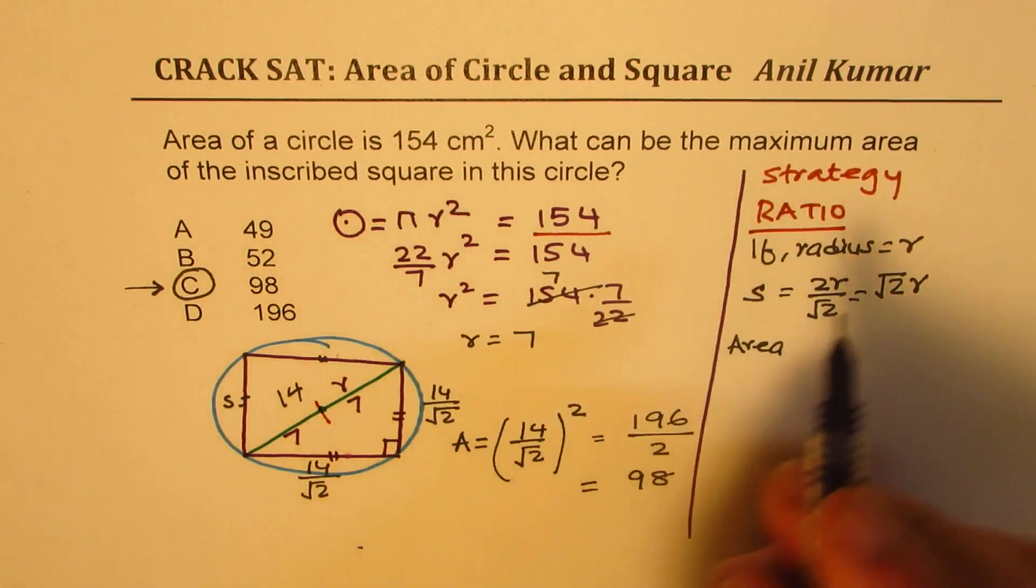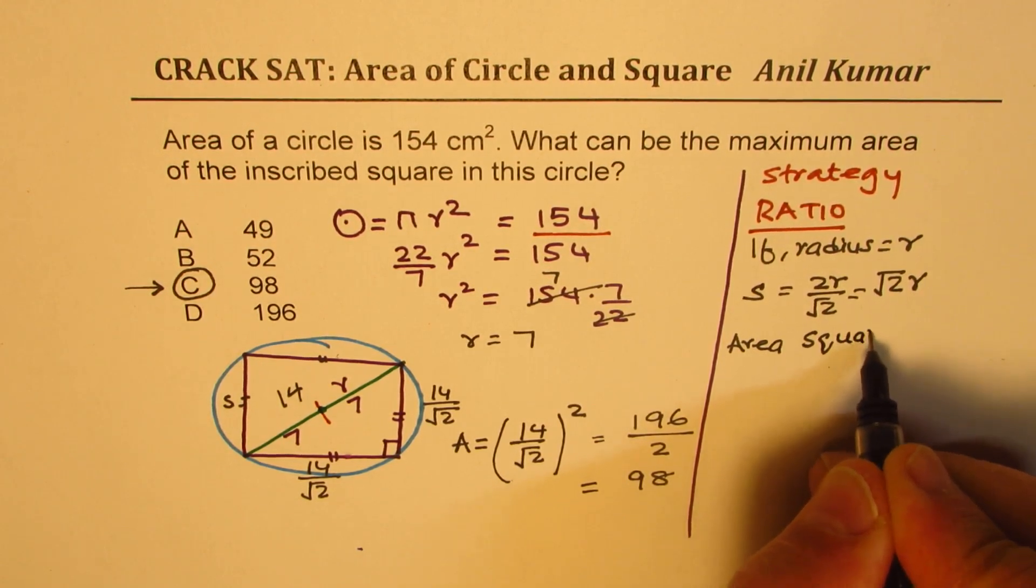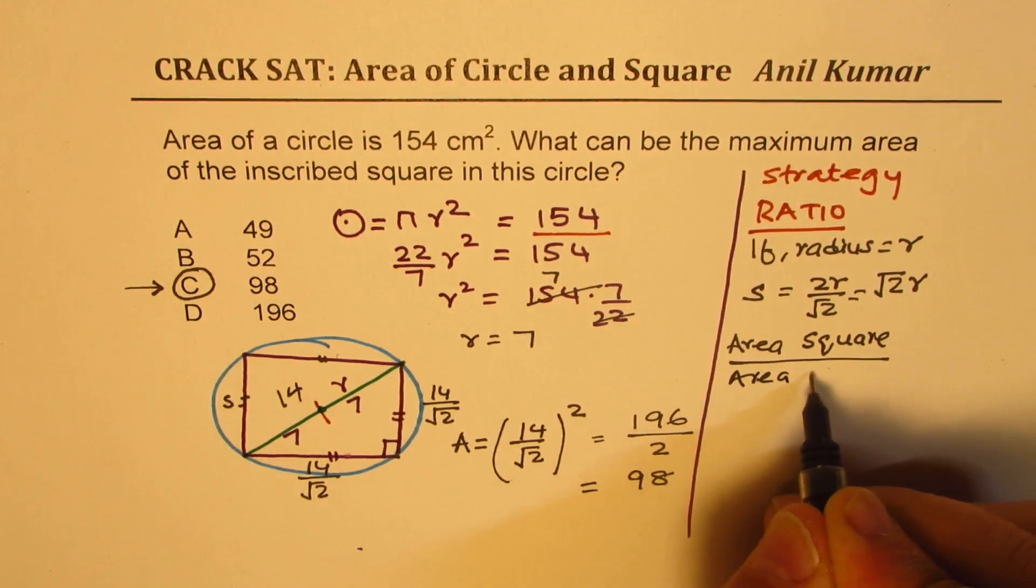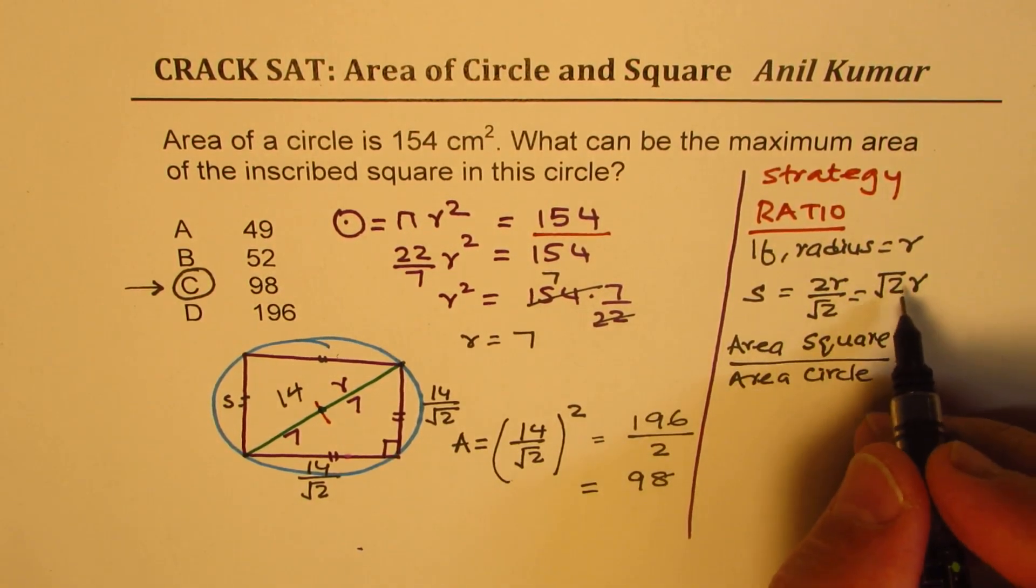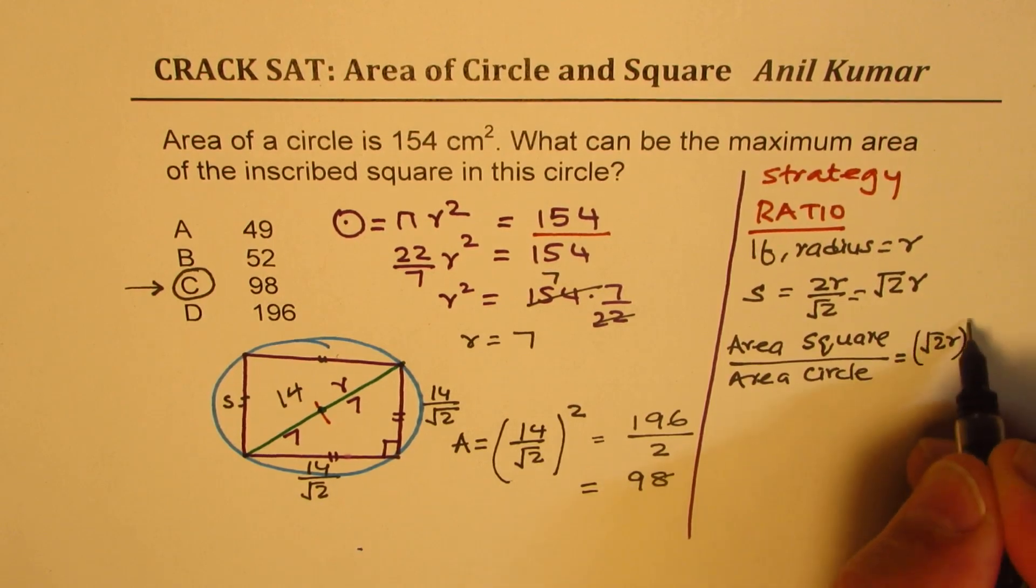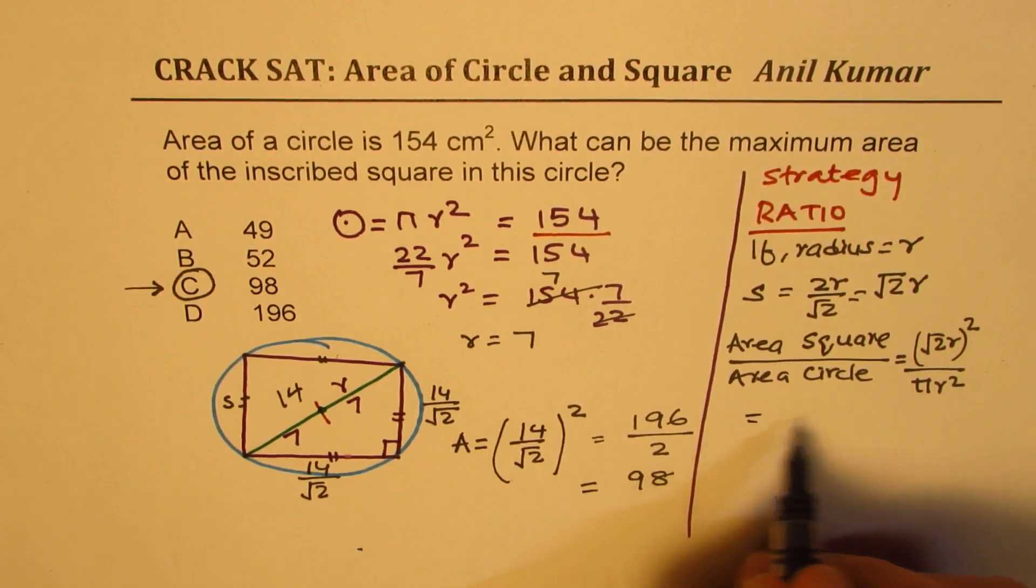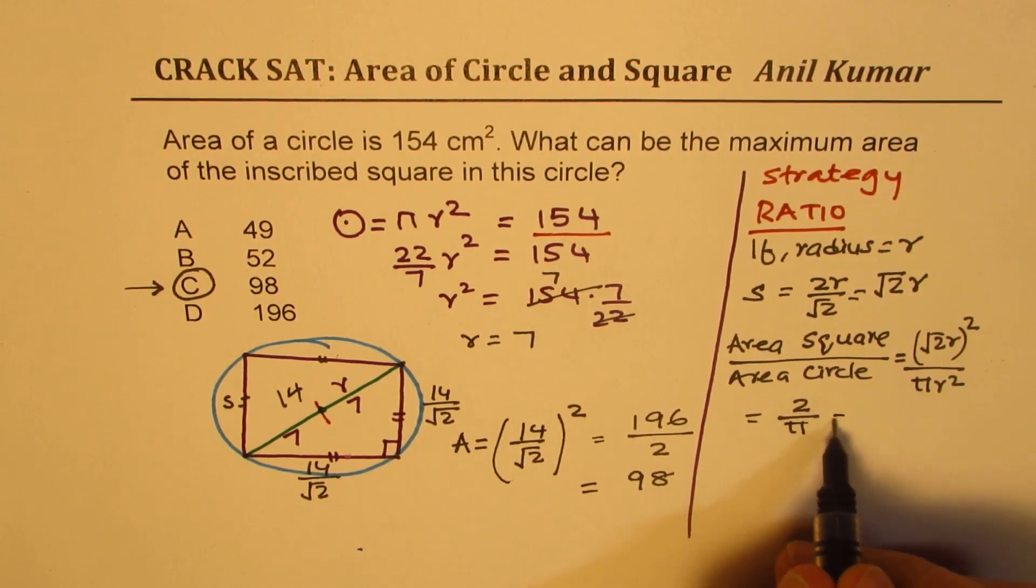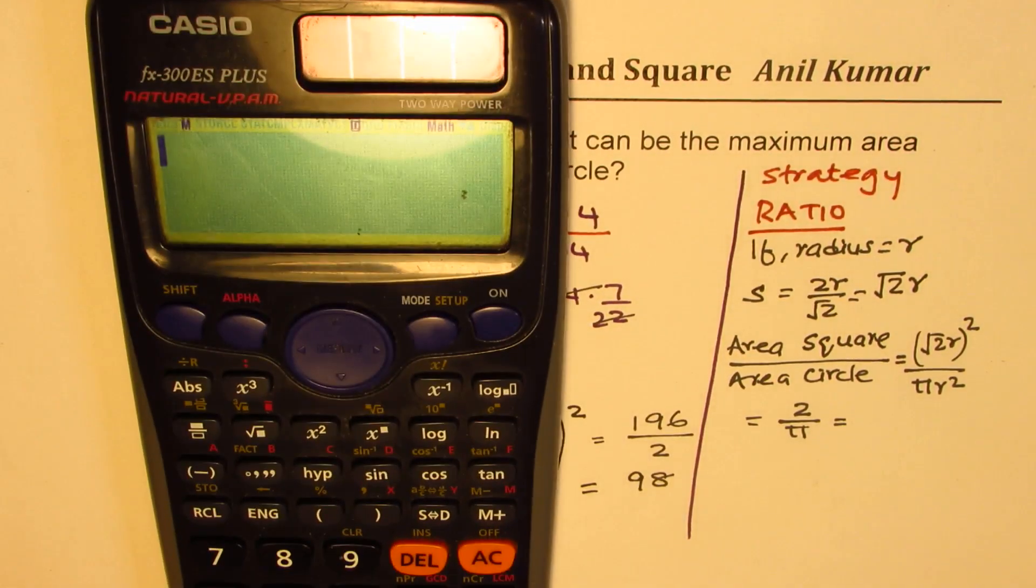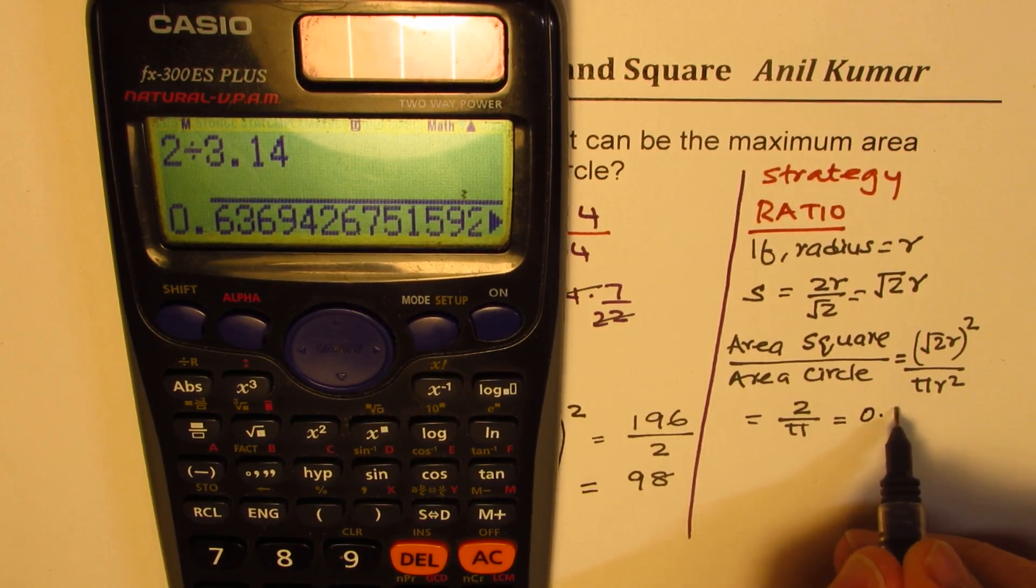From here, you get a ratio of area of square over area of circle, which is going to be equal to area of square will be square root 2 r whole square, which is basically equal to square root 2 square is 2 divided by π. So that is the ratio, which is 0.63 something. So it is 2 divided by 3.14, which is in decimals, equal to 0.636 or you can say 64%.